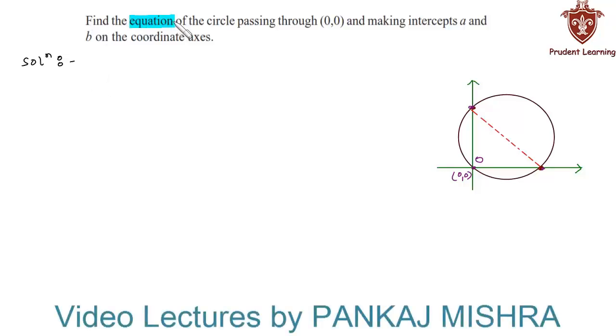Find the equation of the circle passing through origin and making intercepts a and b on the coordinate axes. In this question we have a circle that passes through origin and it makes an intercept of a on x-axis and intercept of b on y-axis. With this information we need to find the equation of this circle.